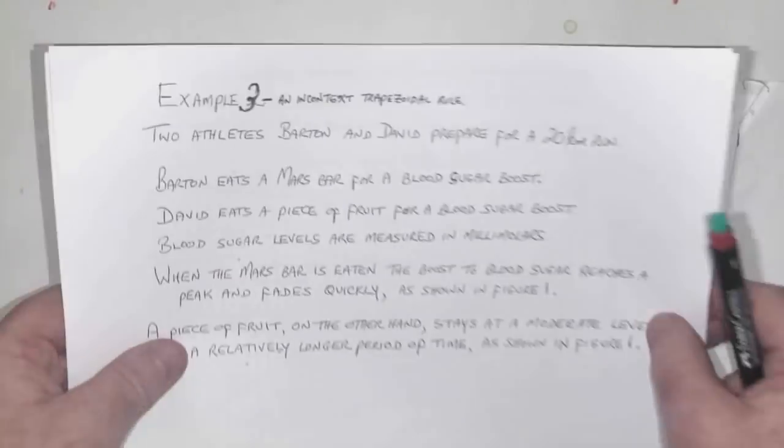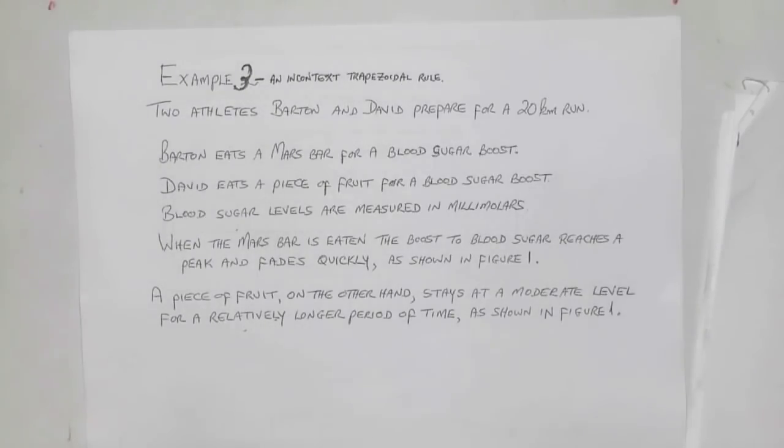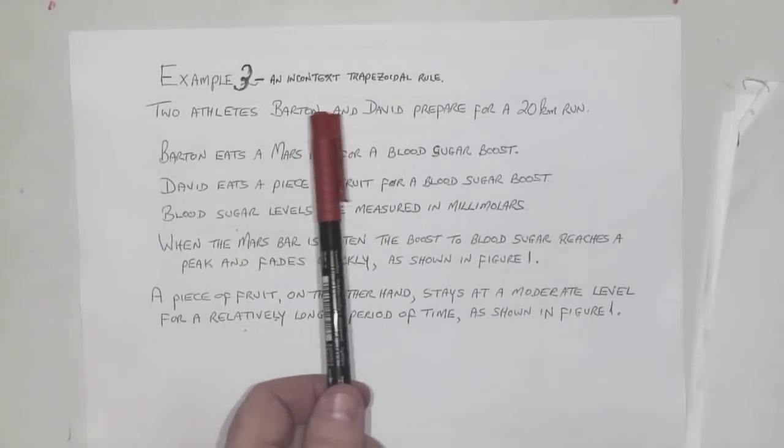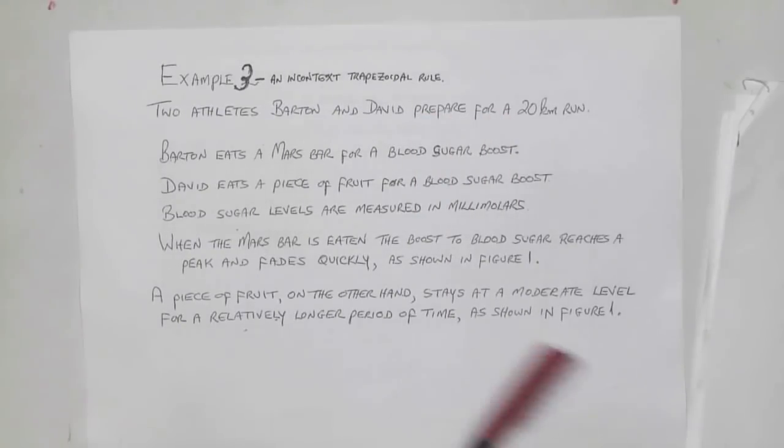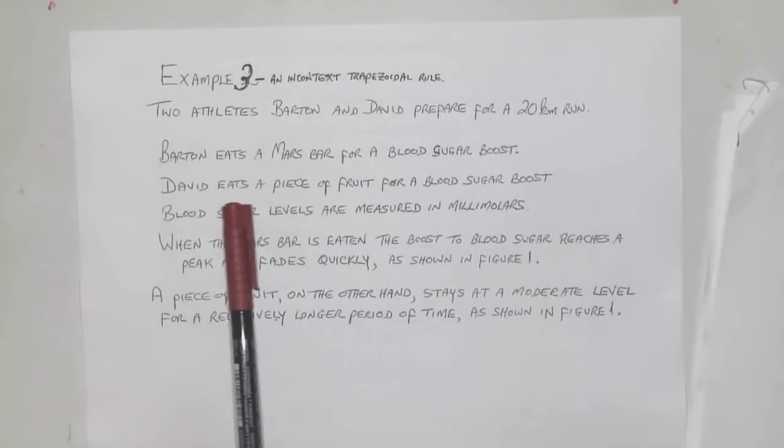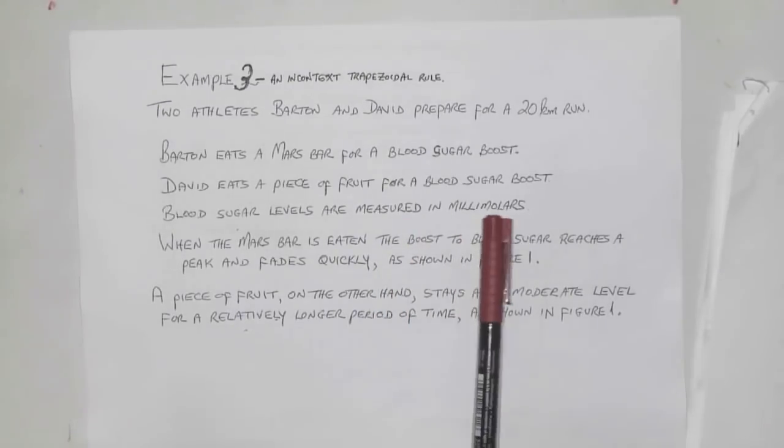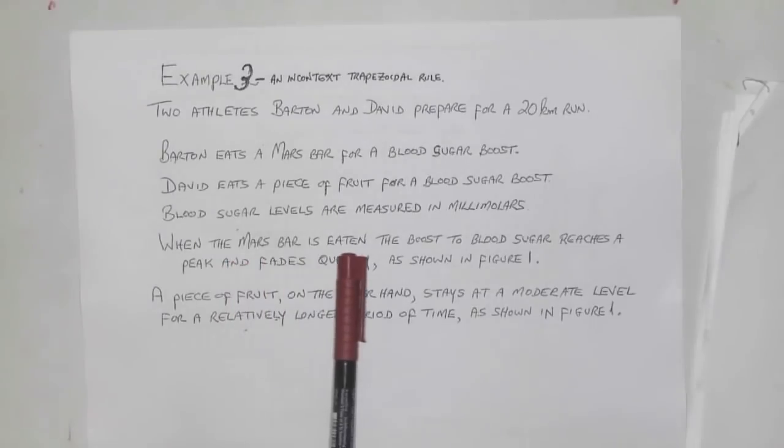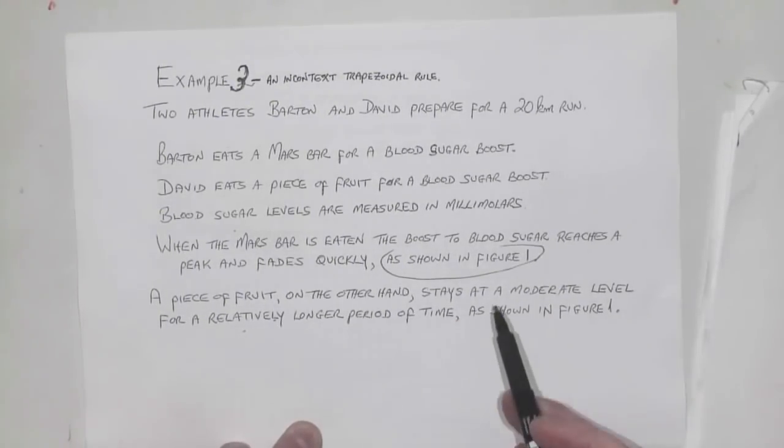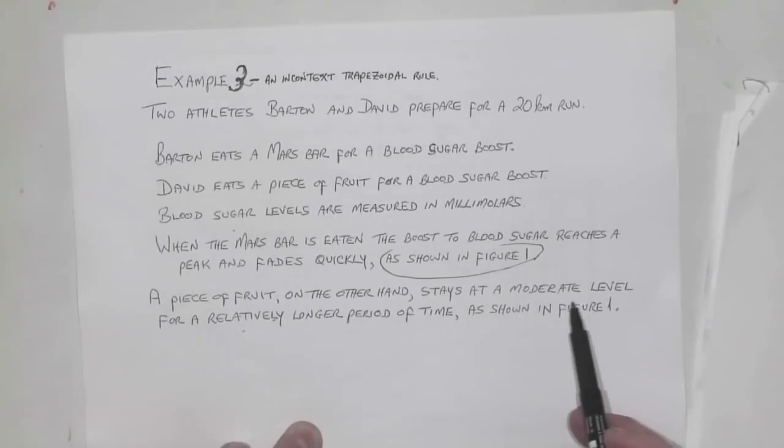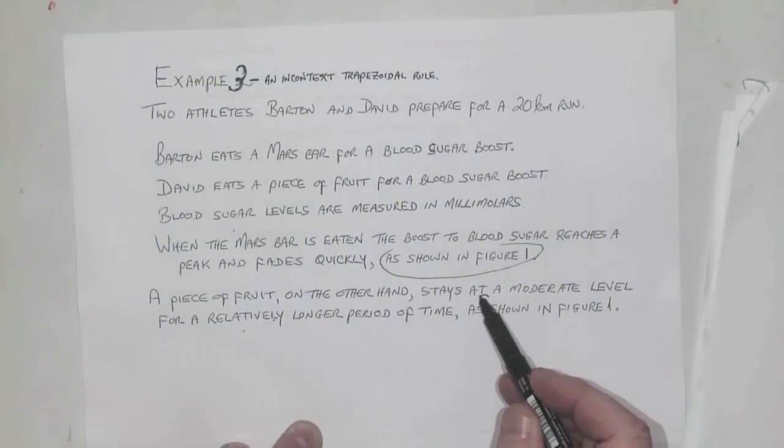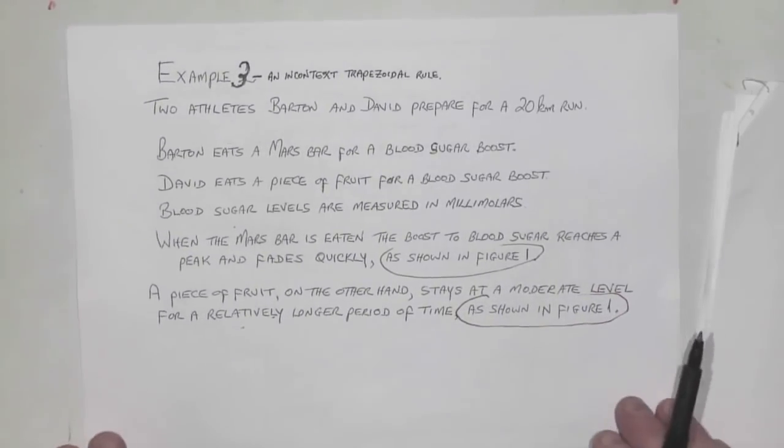Now for the main event: a real-life application. Two athletes, Barton and David, prepare for a 20-kilometer run. Barton eats a Mars bar for a blood sugar boost; David eats a piece of fruit. Blood sugar levels are measured in millimolars. When the Mars bar is eaten, the boost reaches a peak and fades quickly as shown in Figure 1. A piece of fruit stays at a moderate level for a longer period.